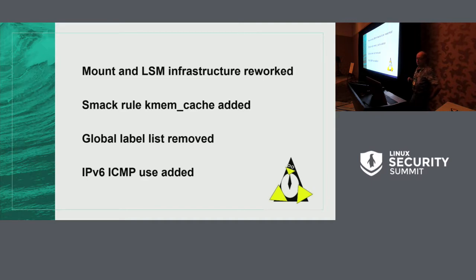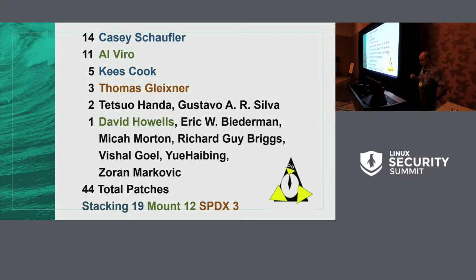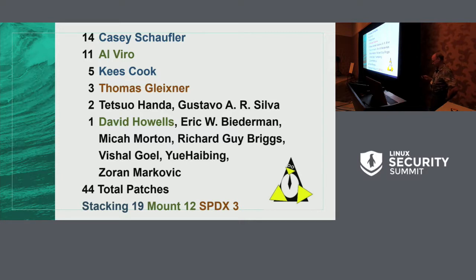So, there hasn't been a lot of change, but just to give you an idea of how many changes have gone through — we had 44 total changes. Most of them were in the stacking infrastructure. By far, the next most were the mount infrastructure changes. There's some overlap in there, because there are mount infrastructure changes for stacking as well as for the mount infrastructure. A bunch of the cleanup that's been going on throughout the Linux kernel showed up here as well.